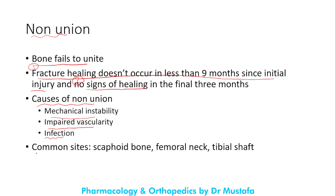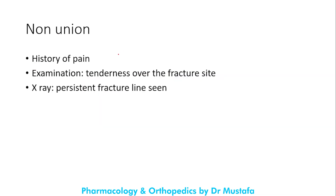Common sites of non-union are the scaphoid bone, femoral neck, and tibial shaft, mostly due to limited blood supply to those sites. The patient presents with pain most of the time; on examination there is tenderness over the fracture site, and on X-ray a persistent fracture line is seen.